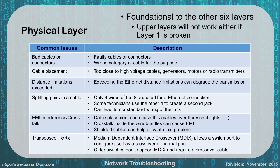Remember the Ethernet distance limitations: 10Base2 is 185 meters, 10Base5 is 500 meters. Category 3, 5, 5e, 6, 6A, or 7 cabling is limited to 100 meters. Fiber supports really long distances as previously discussed.